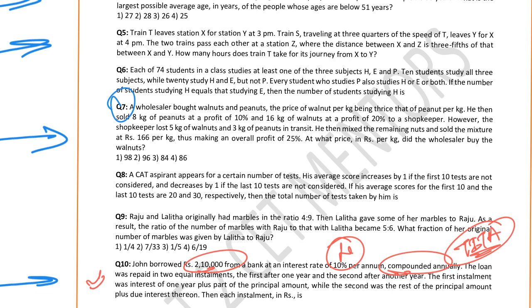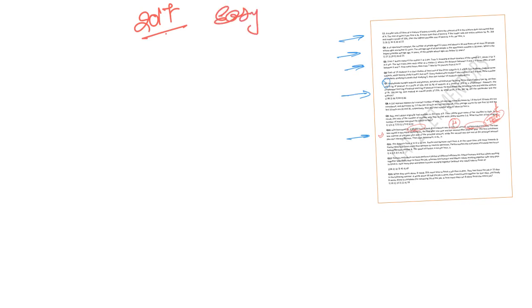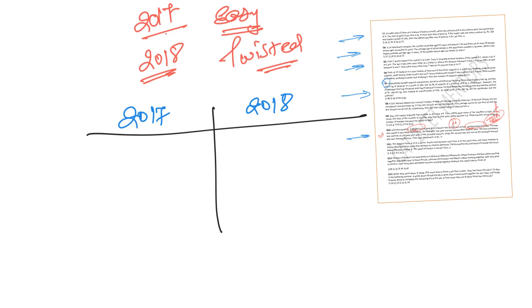The moment you get lengthy questions that are also TITA, that's where the entire problem starts. There is nothing wrong with TITA questions or lengthy questions as such, but understand - TITA does not make the paper more difficult conceptually. Looking at what happened in 2018 when IIM Calcutta set the paper: in 2017, the quants section was damn easy. In 2018, it wasn't really tough, but it was twisted a bit, and we need to understand that.